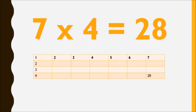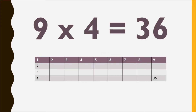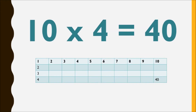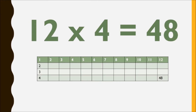8 times 4 is 32. 9 times 4 is 36. 10 times 4 is 40. 11 times 4 is 44. And 12 times 4 is 48.